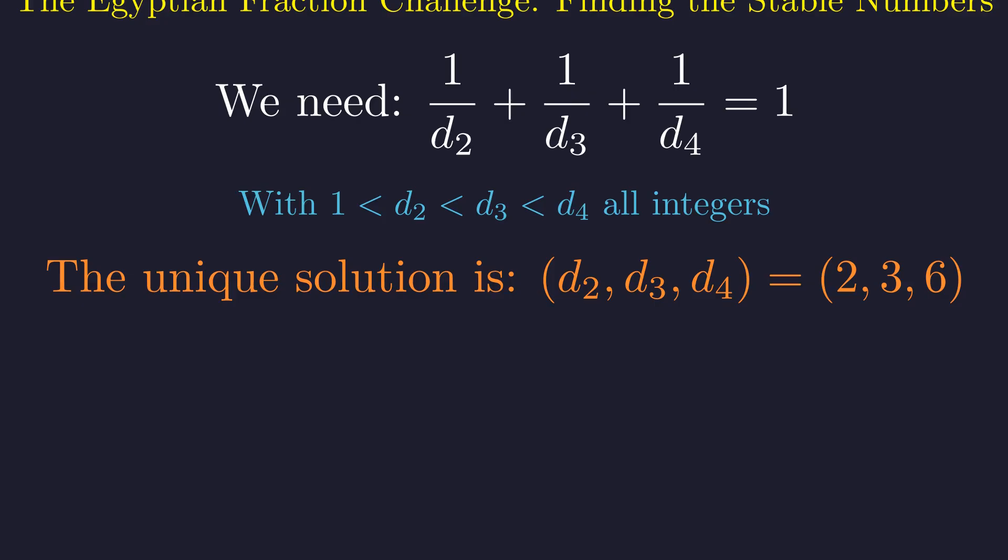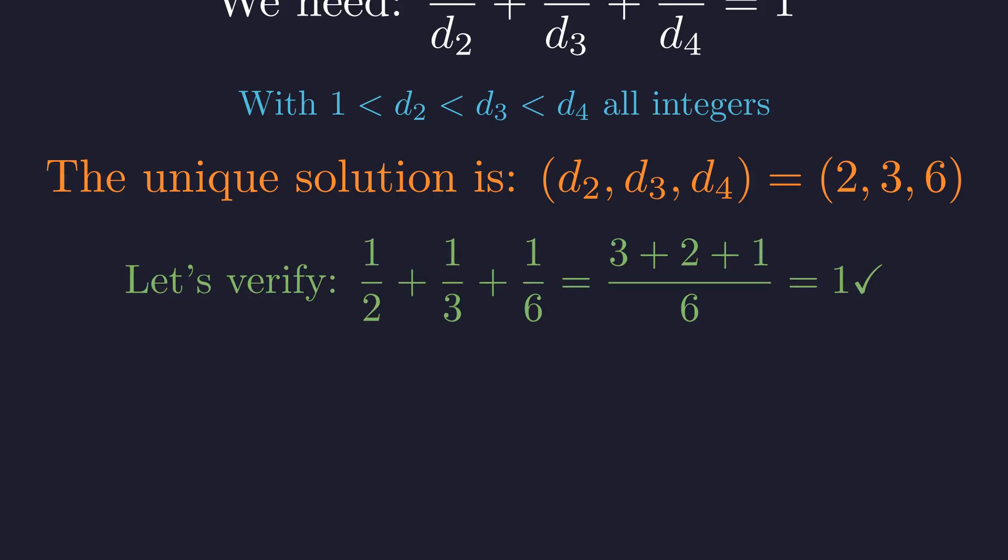By bounding d2, we can show there is only one integer solution: d2 equals 2, d3 equals 3, and d4 equals 6. We can verify this solution. 1/2 + 1/3 + 1/6 is equal to 3/6 + 2/6 + 1/6, which sums to 1.